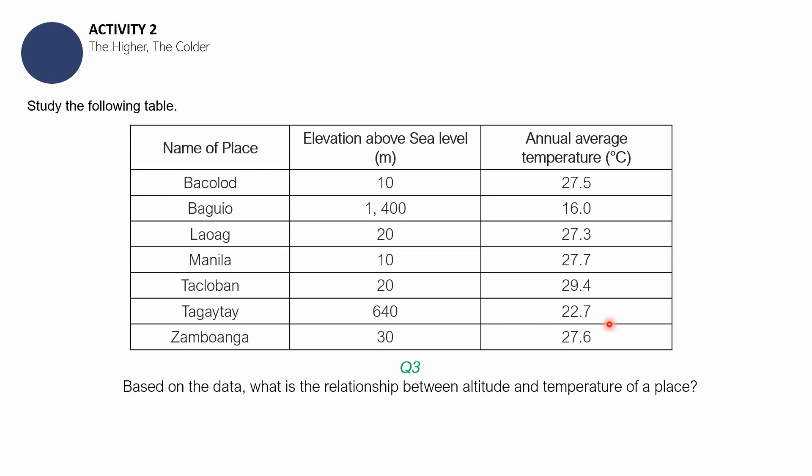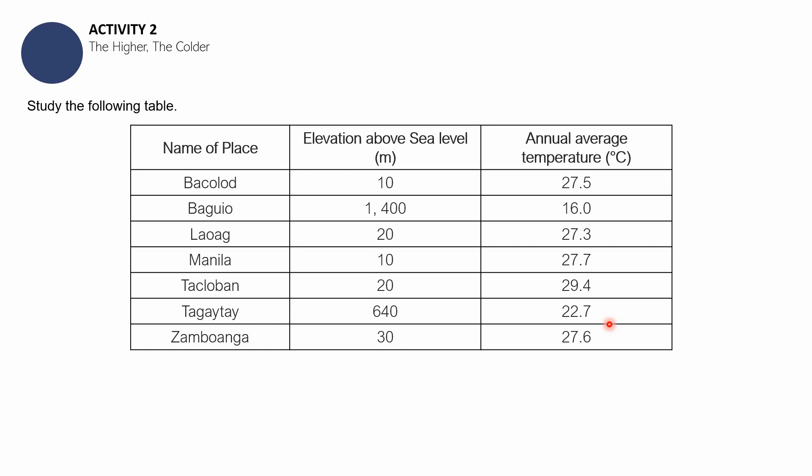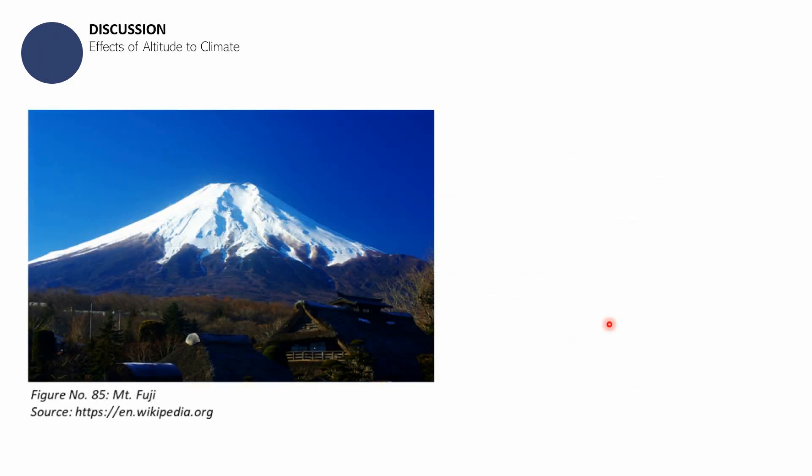Finalize your answers. Once you're through, rate yourself — if you got all three questions correctly, rate yourself 3 over 3. If you're not satisfied with one, give yourself 0.5 less. Let us now proceed with the next part of this session, which is a discussion about the effects of altitude on climate. As we established earlier — the higher the altitude, the lower the temperature.